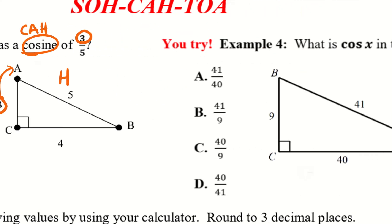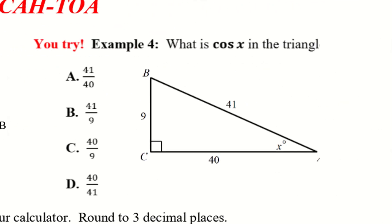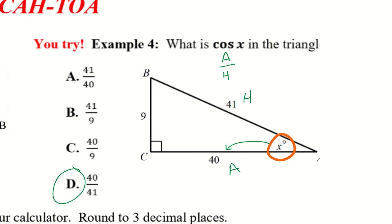Let's take a look at example 4. What is cosine X? Remember cosine is adjacent over hypotenuse, so I want the adjacent side and the hypotenuse. That should be 40 over 41, so the answer would be D.